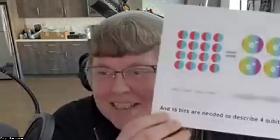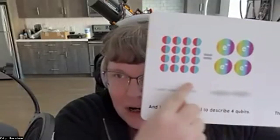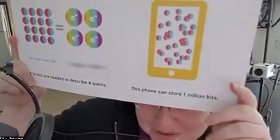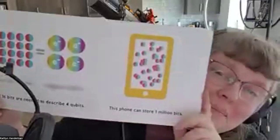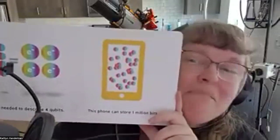And 16 bits are needed to describe four qubits. So here we have 16 bits over here and four qubits. This phone can store one million bits — and it can store 20 qubits of information. So you could store a million bits in 20 qubits.